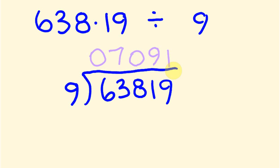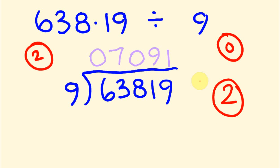How many decimal places are we going to have? We have two here, we have none here, so two take away nothing is we should end up with two decimal places. So two take away nothing is two, so we're going to end up with one, two decimal places. So our answer is 70.91.